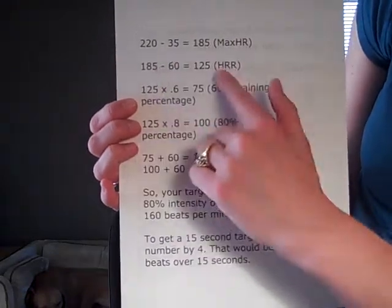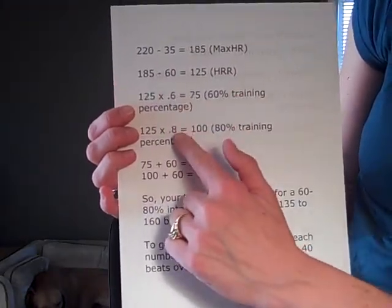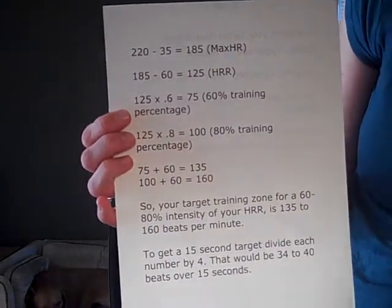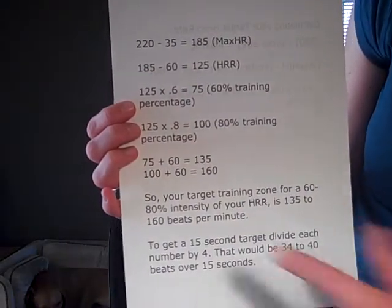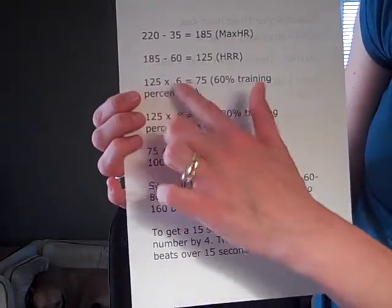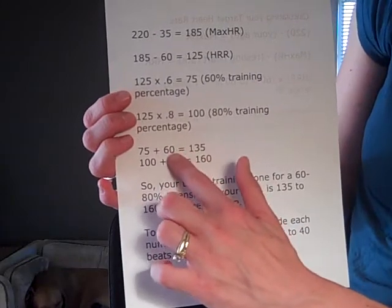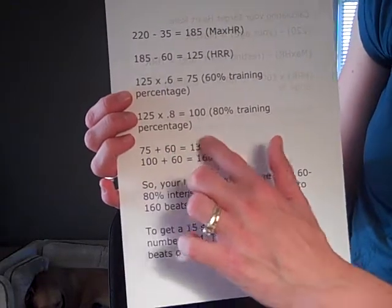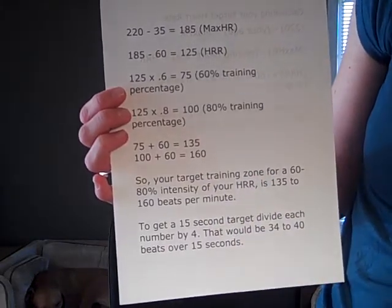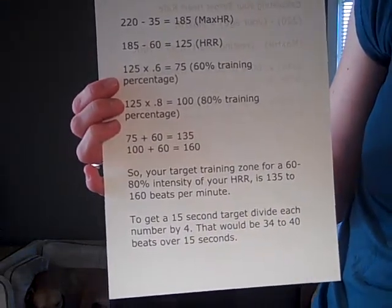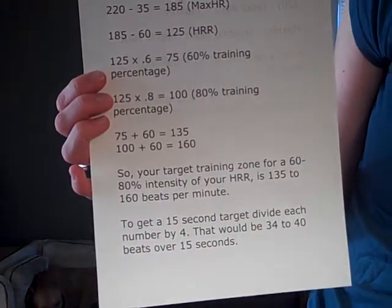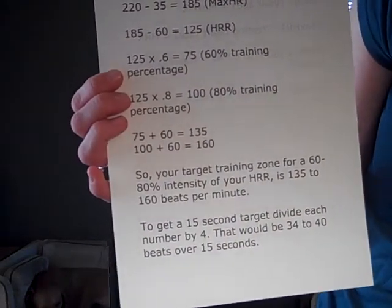We're then going to multiply our heart rate reserve number by 0.6 and 0.8, which is the training zone of 60 to 80% intensity. From there, we take those two numbers and add back our resting heart rate. So we get 75 plus 60, which is 135, and 100 plus 60, which is 160 — giving us a target heart rate training zone of 135 to 160 beats per minute.